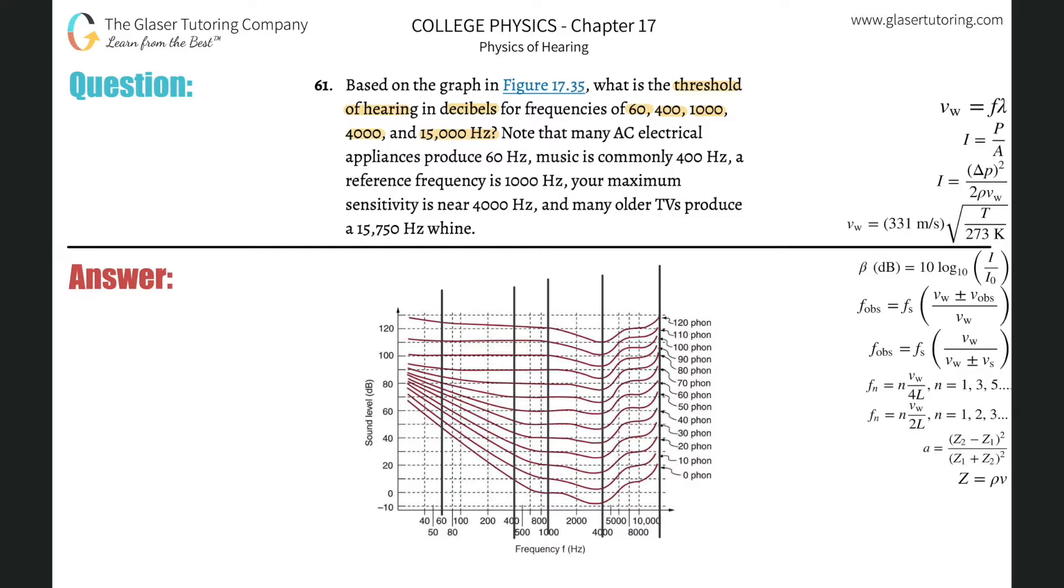Now all we have to do is find the sound intensity level that correlates with these for the threshold value. The first one looks like about 48 for 60 Hz. Then the next one is somewhere over here, it looks like it's exactly at 10, roughly maybe a little bit below.